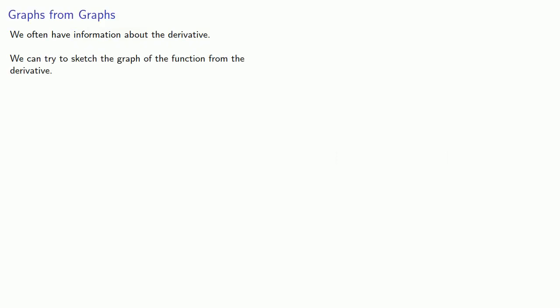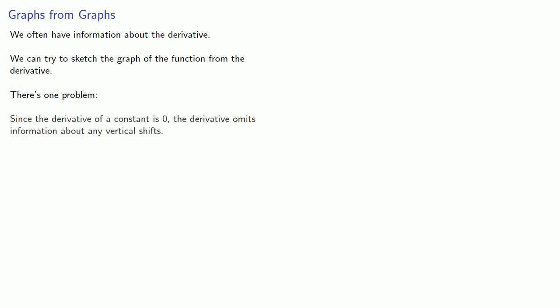We often have information about the derivative, and we can try to sketch the graph of the function from the derivative. There's just one problem: since the derivative of a constant is zero, the derivative omits information about any vertical shifts, so we can't place the x-axis.